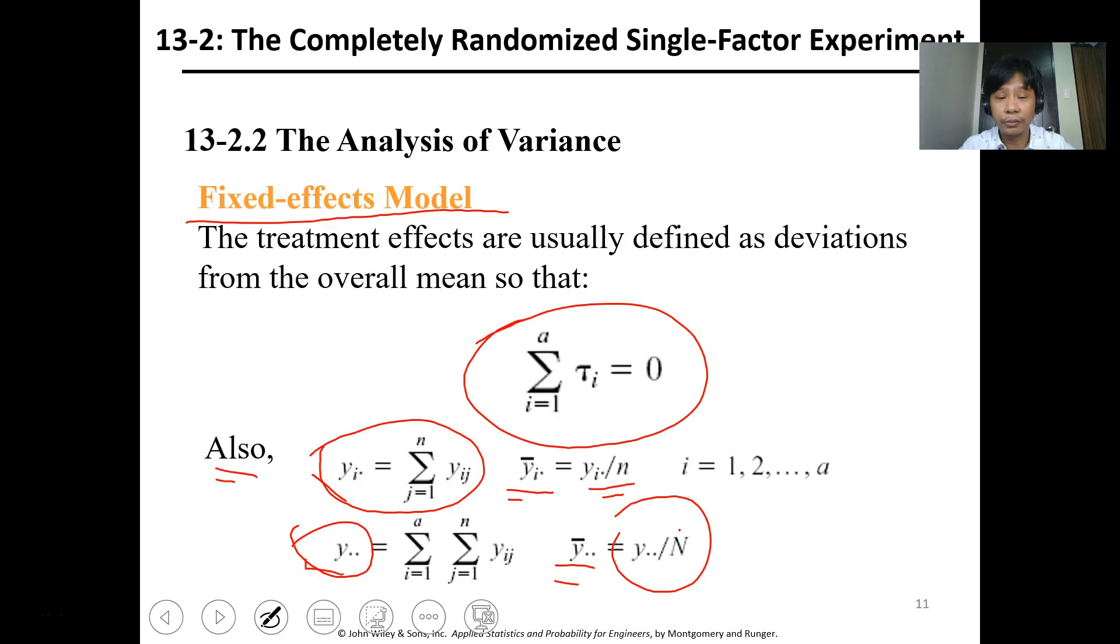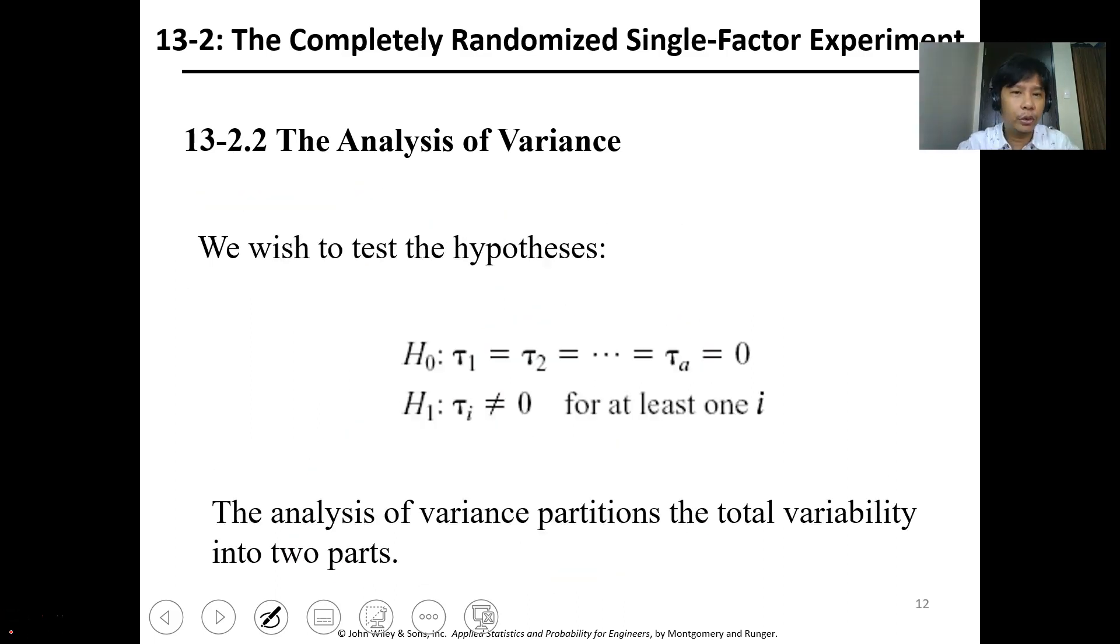How do we analyze the difference in our data? We usually use the analysis of variance, and this is the hypothesis. The null hypothesis states that there is no variation in the variance of your data, meaning the treatment is not significantly effective. The alternative is that tau is not equal to zero for at least one i, meaning for one treatment there is a variation, so there's an impact of the treatment.